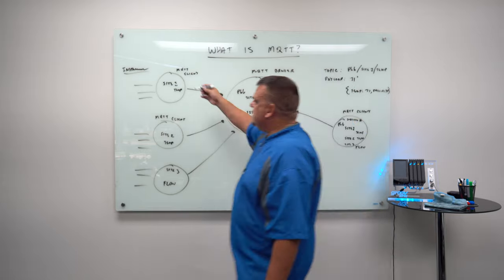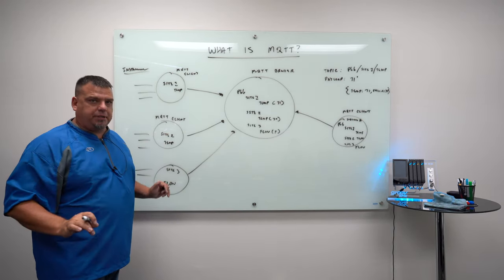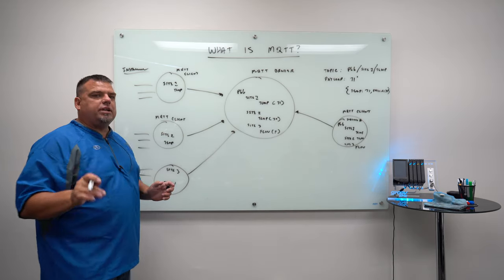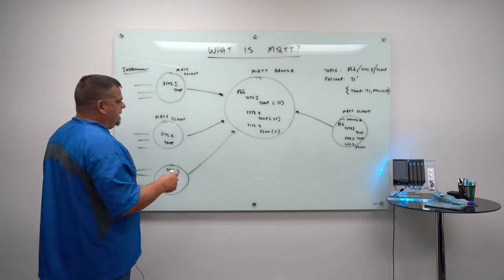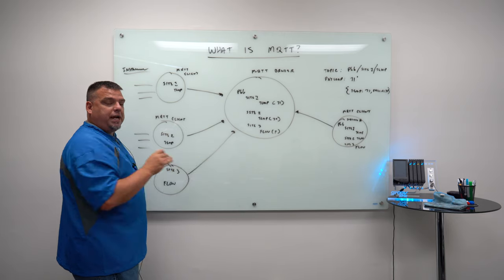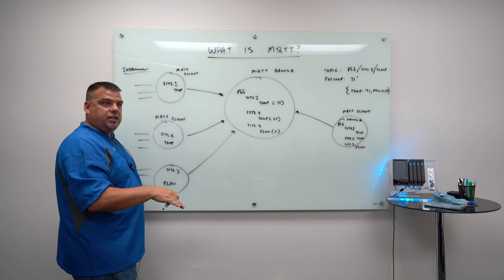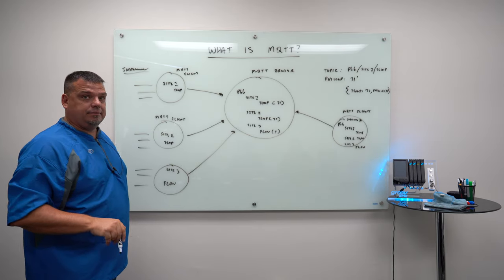Number one, if these clients out here are out on my, these are my assets in my plant. One of the biggest risks you have in industry with the previous OPC UA infrastructure I showed you guys is that I have to make my assets vulnerable by opening inbound ports in order to talk to them over native protocols. Using this architecture, you do not.